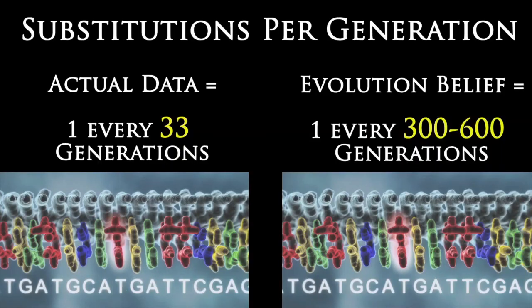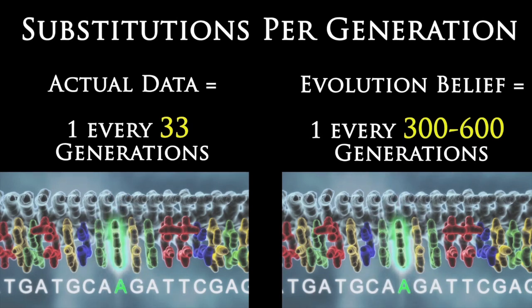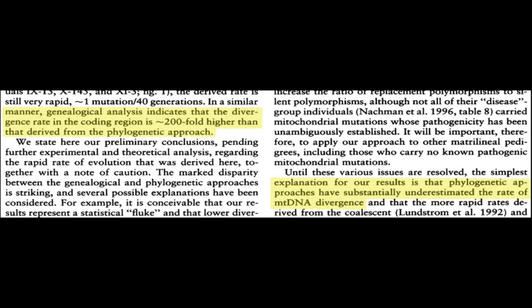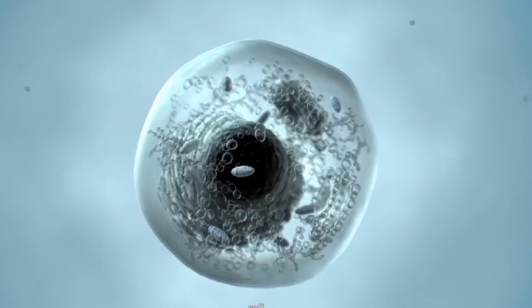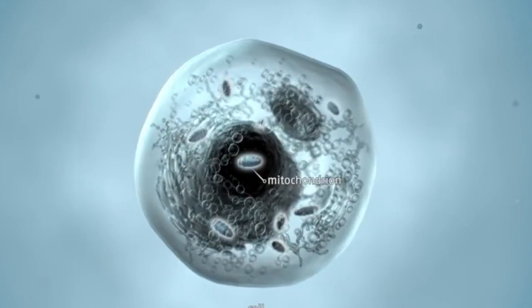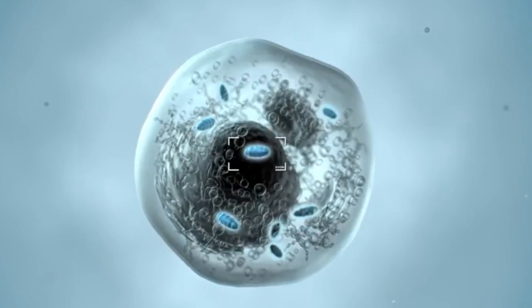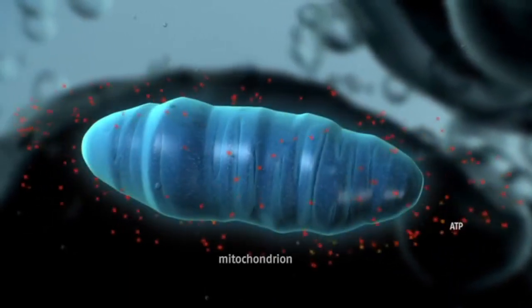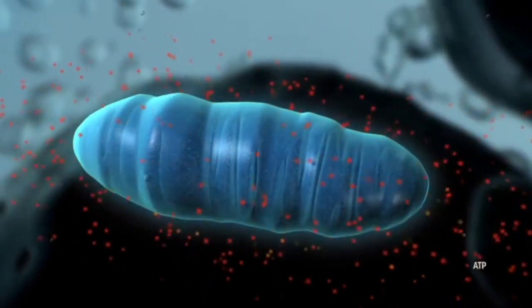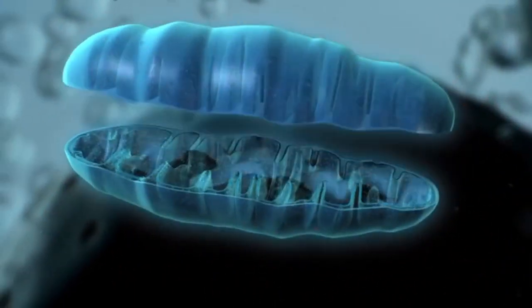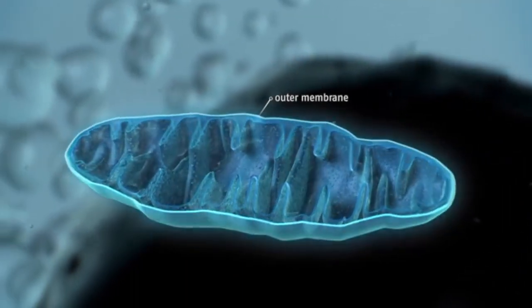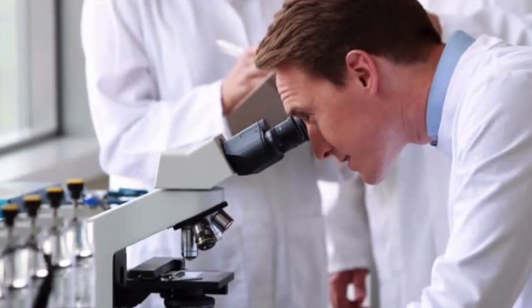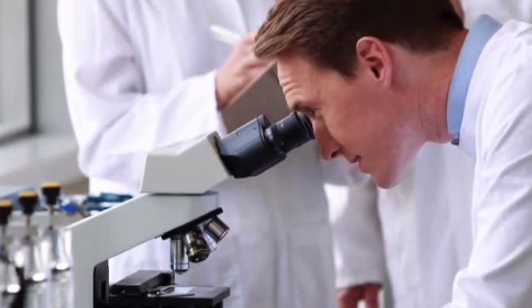What did they discover? They discovered that there's one substitution every 33 generations, going back only about 6,500 years. So now ask yourself, why is it that when testing the entire mitochondria, or any of the 37 individual genes in the mitochondria, or individual sections like the D-loop region, or the CO1 fragment, or even when counting substitution rates, no matter where you look or what you test, they all give the same results?